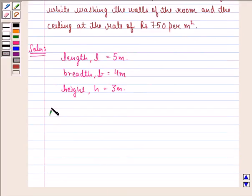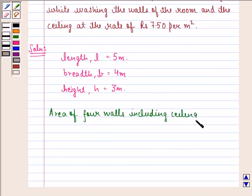Now we see that area of 4 walls including ceiling will be equal to twice of length plus breadth into height plus length into breadth.